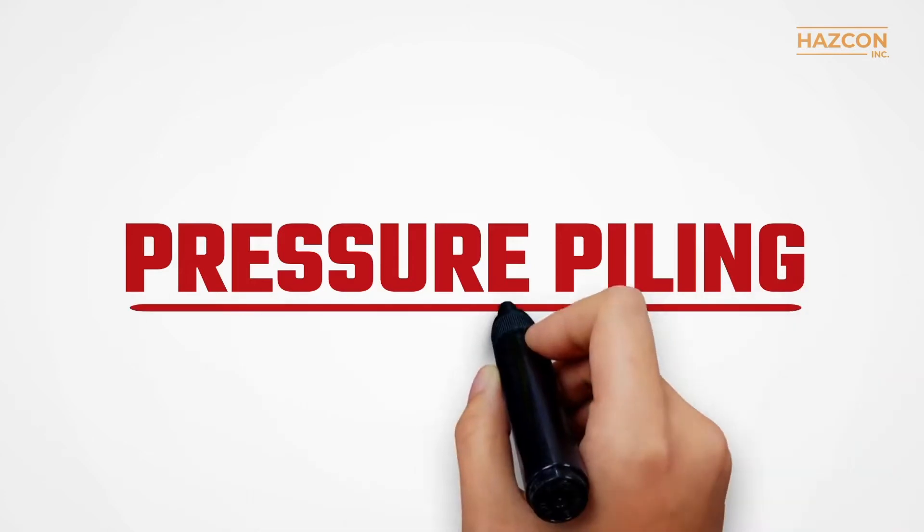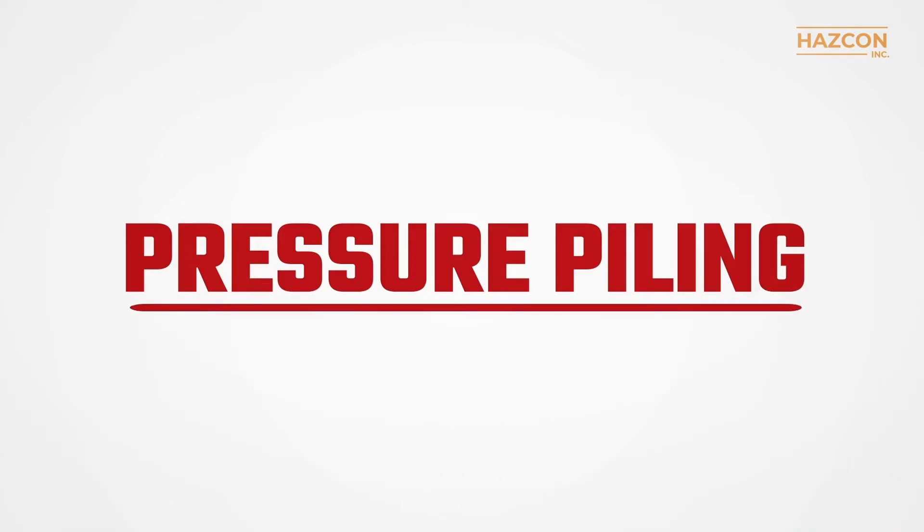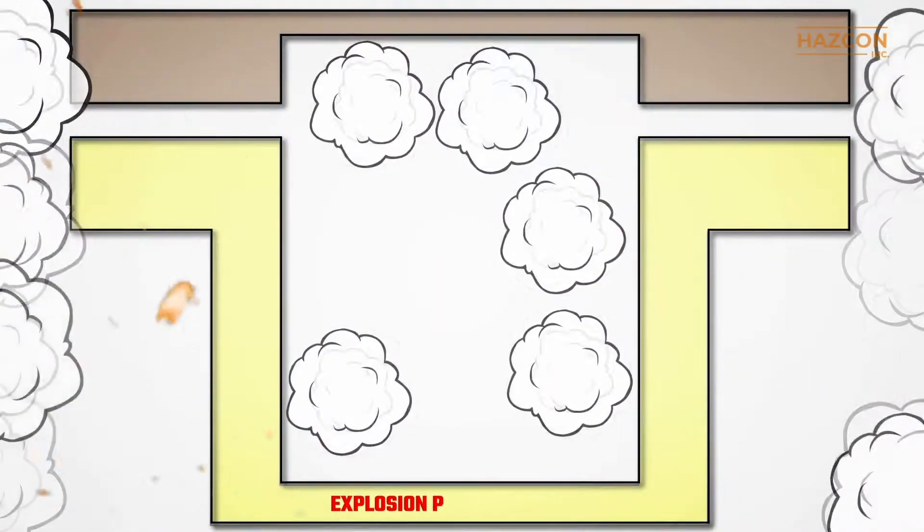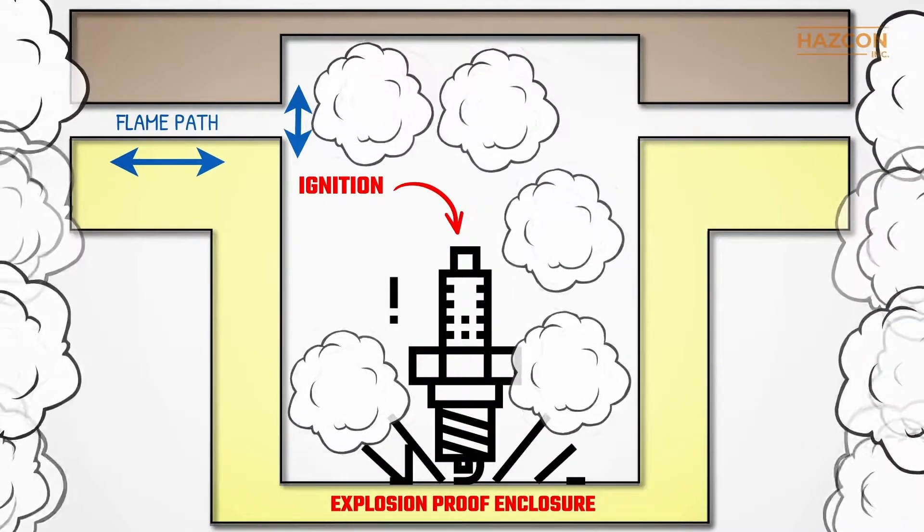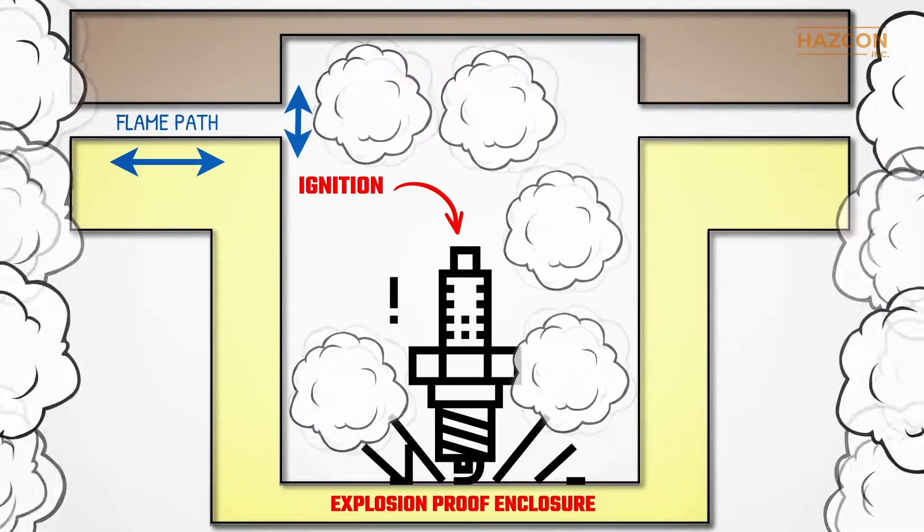You may have heard of the phenomenon called pressure piling, which adds to the severity of an explosion. In this animation, we're going to talk about pressure piling, which can happen when explosion-proof enclosures are not designed and installed properly for use in a hazardous area.